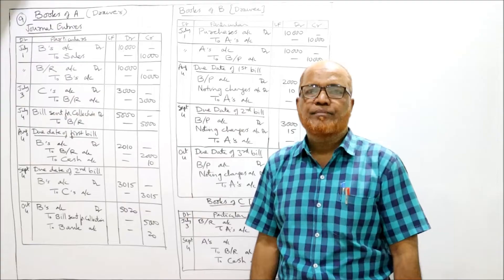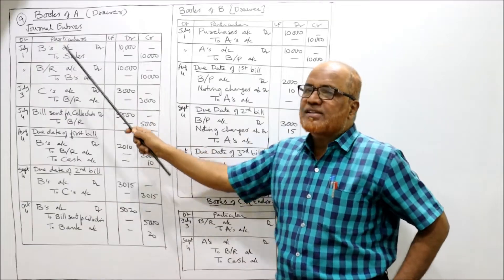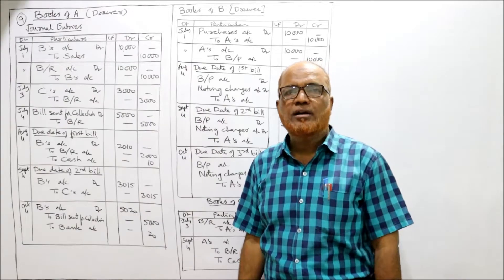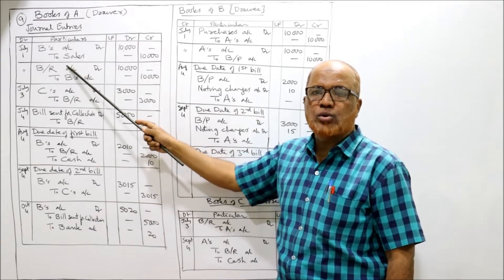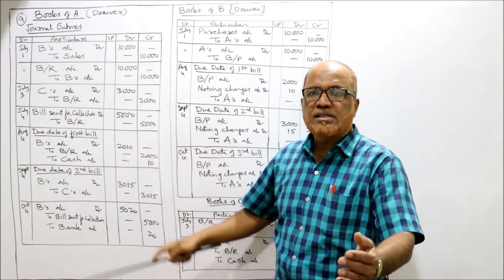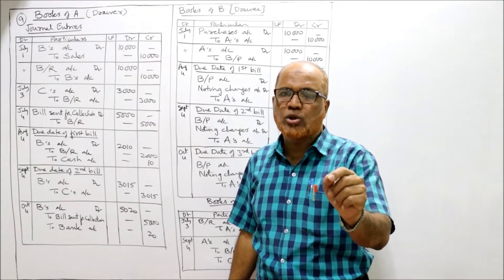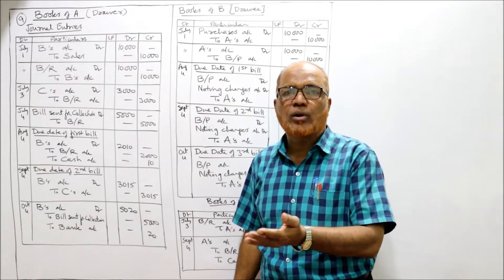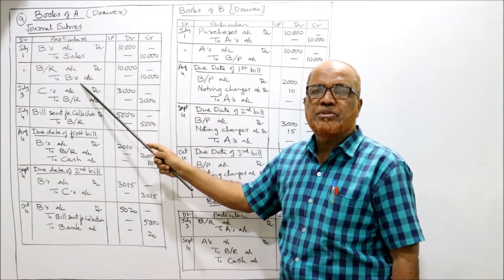We have to pass general entries in the books of A, B, and C. First, books of A: on July 1st when A sells goods to B, entry is B's account debit to sales — being goods sold on credit. Second, three bills are drawn by A on B and B accepts those bills and returns them to A. Entry: bills receivable account debit to B's account.